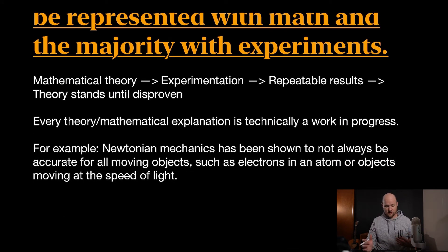So for example, Newtonian mechanics has been shown to not always be accurate for all moving objects, such as electrons in an atom or objects moving at the speed of light. So we had all these Newtonian mechanics, all these Isaac Newton equations, and they're really good for balls flying through the air or shooting an arrow or something like that. But when we started studying the electron around an atom, we realized that the Newtonian mechanics and the Newtonian equations don't exactly fit anymore. And so we had to come up with new equations and new understandings. And not just that, but also whenever things were moving at the speed of light, we started studying stuff like that, and we realized, well, you know, all of Isaac Newton's equations don't exactly fit.